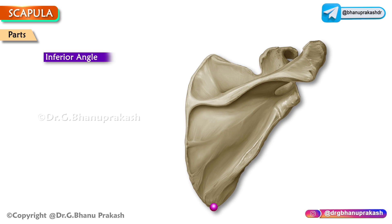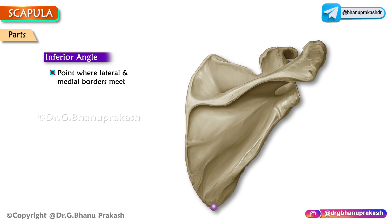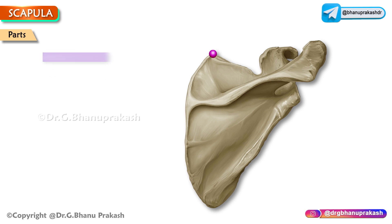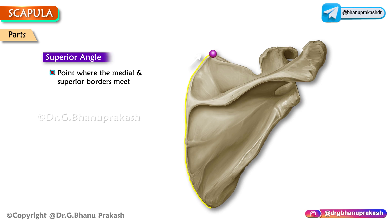The inferior angle is the point where the lateral and medial borders meet. It lies at the level of the seventh rib. The superior angle is the point where the medial and superior borders meet.